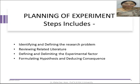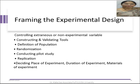Next is formulation of hypothesis and deducing consequences. Hypothesis shows the direction of the research process. In experimental research, the research design is basically based around clearly stated objectives and a tentative hypothesis.